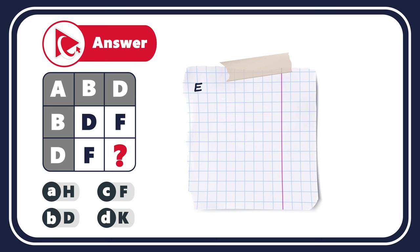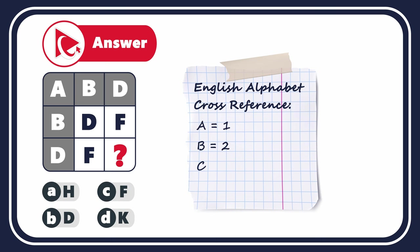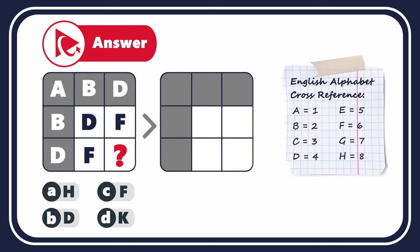Each letter corresponds to a specific place in the alphabet, which can be represented by a number — for example, A equals 1, B equals 2, C equals 3, and so on. Following this logic, we can replace all letters in all three rows with numbers.